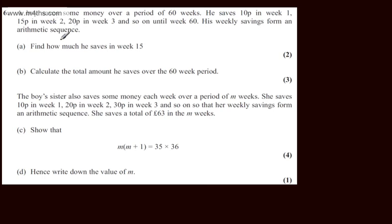In part a we're asked to find out how much he saves in week 15. The question carries two marks. We can use a sub n equals a plus n minus 1 multiplied by d, where d is the common difference.